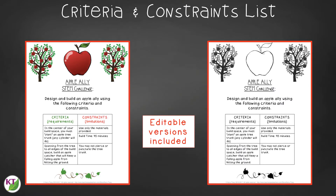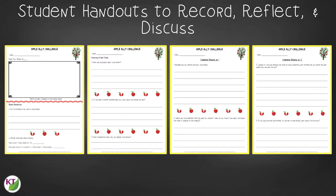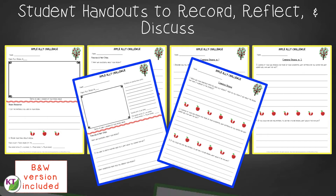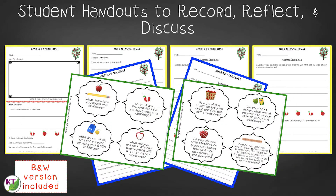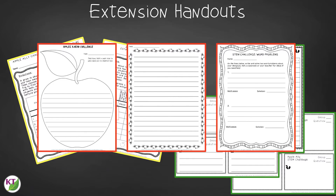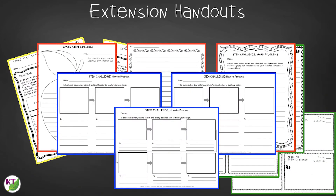You'll find an editable criteria and constraints list so you can tailor the challenge to your students. For student handouts, there are two versions: a four-page expanded room-for-response version for younger students and a two-page condensed paper-saver version. You'll also find a set of group discussion questions. In the extension handouts, you'll find estimate-and-measure mass handouts, as well as task card templates for student-made questions related to the challenge — use them for a game of scoot, a center for early finishers, or an option for sub plans. You'll also receive two Apple writing templates and math extension and process flow templates.